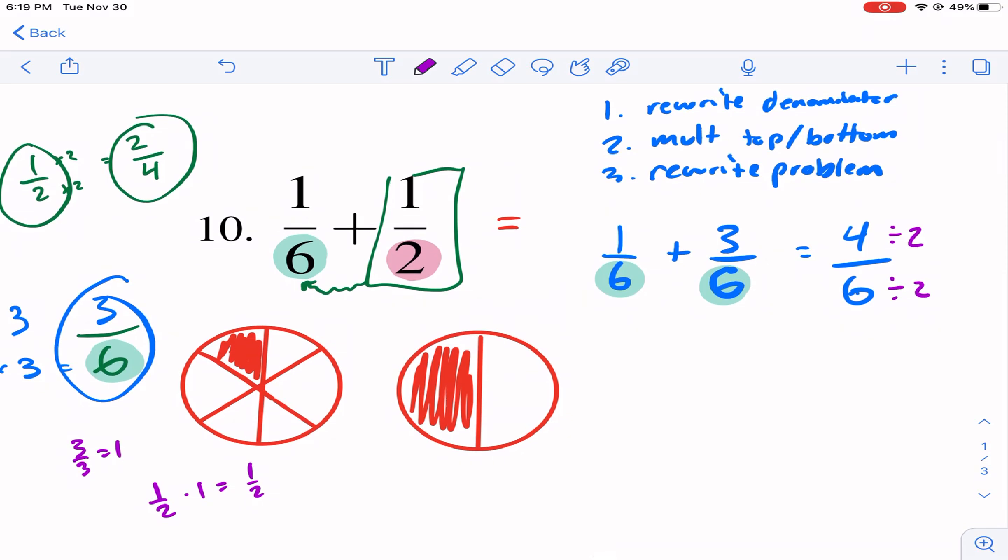So here we have one sixth that we had before. And instead of writing one half, which does me no good because I can't add the six and the two together, or the half and the six together, I write three sixths because that's equal to one half. And so now I have my rule, look, six, six, aha, now we can add it. Four over six is my answer. And now I can reduce that. Reducing means I can divide the top and bottom by the same thing. So I have two over three. Two thirds is my answer.